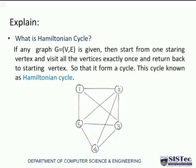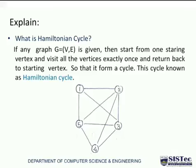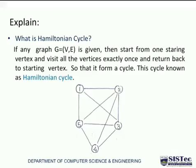So I'm going to start from the problem definition. What is the Hamiltonian cycle? If there is a graph given to you, in that graph you need to find one starting vertex — a starting node. From that node, you have to visit all the vertices of the given graph exactly once and return back to the starting point. If you are able to do this, there would be a cycle, and that cycle is known as the Hamiltonian cycle.